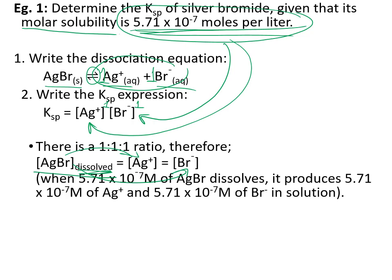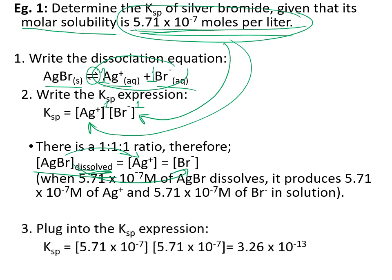So we end up with 5.71 × 10⁻⁷ mol/L of silver ions and 5.71 × 10⁻⁷ mol/L of bromide ions. Plugging those into the equilibrium expression — it's a 1:1 ratio, and the exponents are both one — we end up with a Ksp of 3.26 × 10⁻¹³.